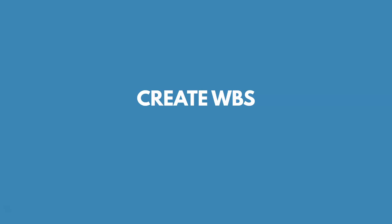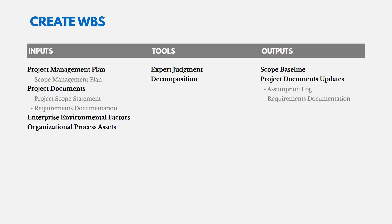Now let's talk about creating the WBS. At this point we've collected requirements and developed a detailed scope description. Now we take that description and decompose it into smaller components, which makes it easier to manage. The inputs for create WBS include the scope management plan from the project management plan, your scope statement — which is what you're going to decompose — your requirements documentation, and enterprise environmental factors and organizational process assets.